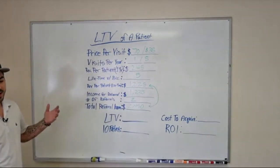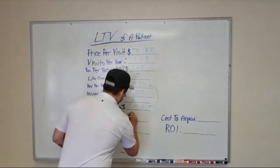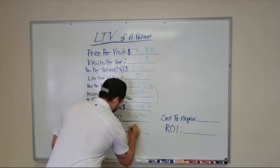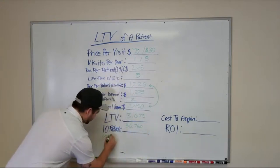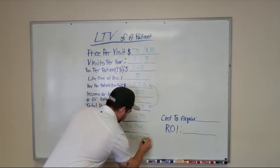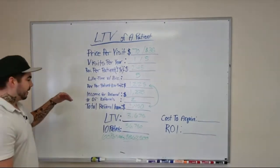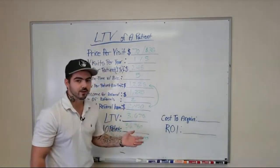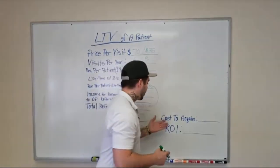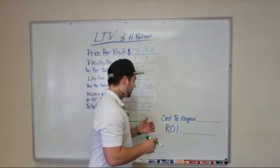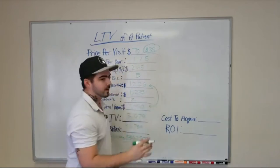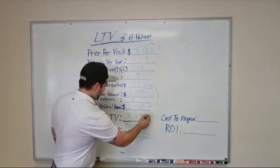Adding those two numbers together — $1,225 in direct revenue plus $2,450 in referral revenue — we end up with a lifetime value of $3,675. So ten patients would be $36,750, and a hundred patients would be $367,500 over their lifetime. The cost to acquire a patient needs to be well under this $3,675 number, and if you can get it under $35, that's even better.